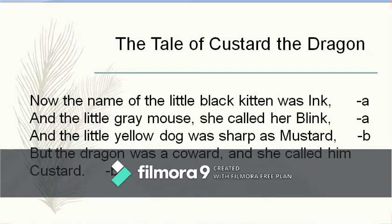The name of the little black kitten was Ink — because it was black in colour. The little grey mouse she called Blink. The little yellow dog was sharp as Mustard, but the dragon was a coward, so she called him Custard. Looking at the rhyme scheme: Ink and Blink rhyme, Mustard and Custard rhyme — so it is A-A-B-B again. It confirms.